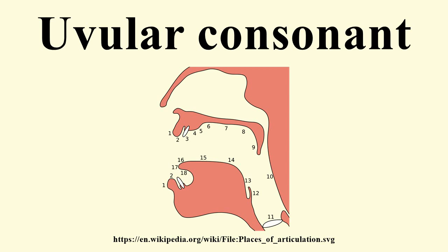The voiceless uvular fricative, CHI, is similar to the voiceless velar fricative X, except that it is articulated near the uvula. It is found instead of X in some dialects of German, Spanish, and Arabic.